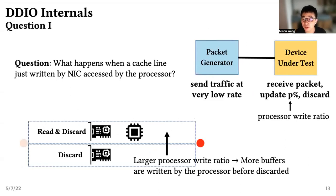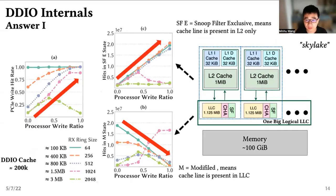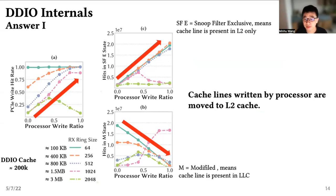Let's see an example. If we want to know what happens when the processor reads a buffer that NIC has just written, we let the packet generator send traffic at a very low rate and let the device under test keep receiving and discarding packets, but read and update part of each. The larger the processor write ratio, the more buffer is written by the processor before being discarded. We find that generally, the larger the processor write ratio, the larger the PCIe write hit rate, and the more cache lines are hit in the Snoop Filter inclusive state, meaning they are present in the L2 cache. The PCIe write hit rate increases because L2 cache is larger than the DDIO portion of the last-level cache in our experiments, so more buffers are kept in the cache. This reveals that cache lines written by the processor core are moved to its L2 cache in a non-inclusive hierarchy.